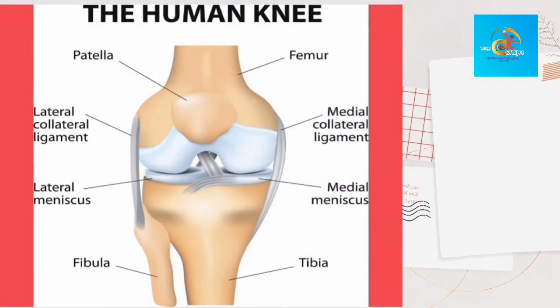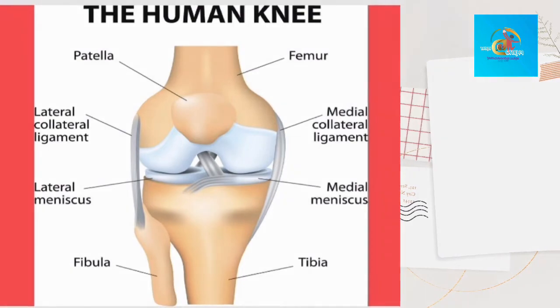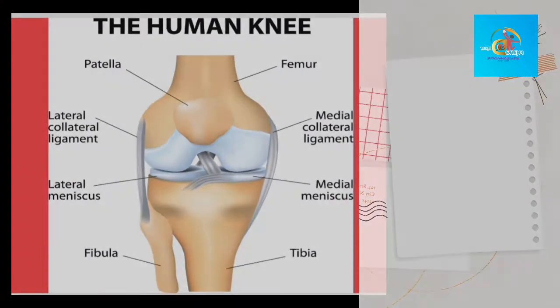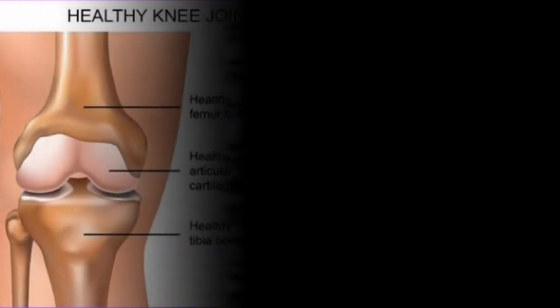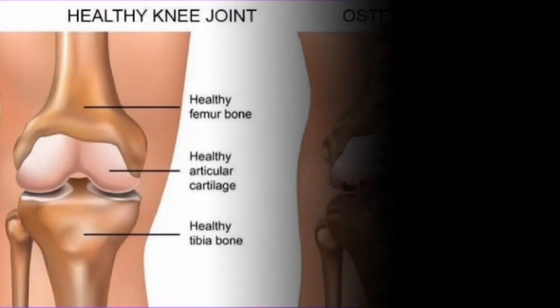Before we come to the definition, let's look at the anatomy of the human knee. The human knee is a complex joint made up of the femur bone and the tibia bone. The joint is held firmly by numerous ligaments and separated by a cushion known as cartilage or meniscus.